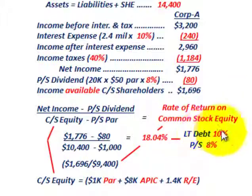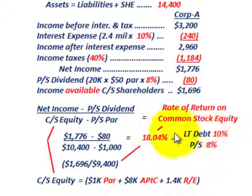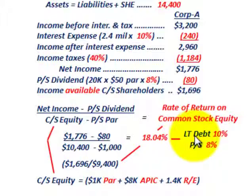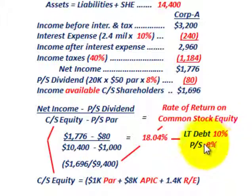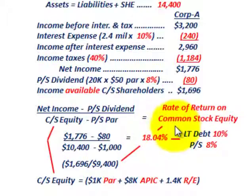Comparing that to our long-term debt at 10% and preferred stock at 8%, the rate of return on common stock equity at 18.04% is substantially greater than either the cost of debt or the preferred stock dividend rate. Now let's make sense of trading on equity and how it works.